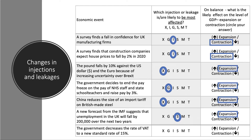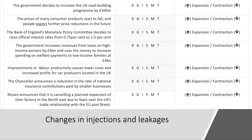Finally on this first slide: the government decreases the standard rate of VAT to a new rate of fifteen percent. A cut in VAT — I think this is an example of a cut in tax, which leaves people with more in their pockets to buy goods and services. Falling VAT should reduce the price of some items, meaning an expansion of demand.